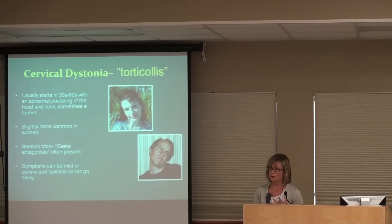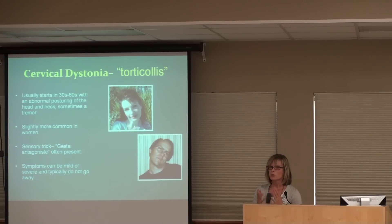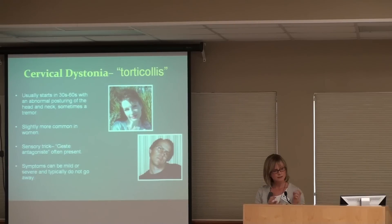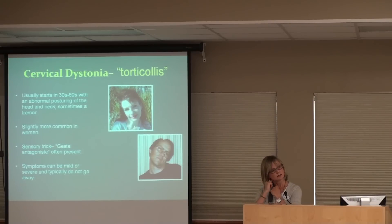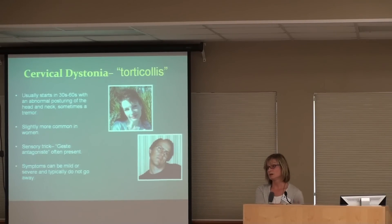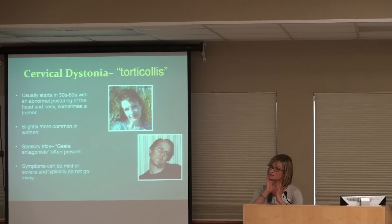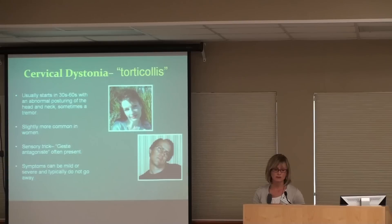This condition is very different from the type of torticollis that infants get. When a baby gets torticollis, it's because they're born with a short muscle in the neck that pulls their head down — that's not really dystonia. Cervical dystonia in adults is acquired in adulthood. A person is born normally and is completely normal throughout their life, and then they just start getting some movement in the neck — that's dystonia. The infant childhood-onset torticollis is a different condition.